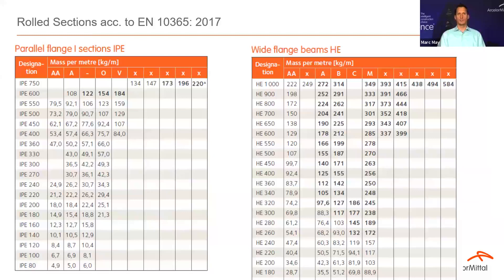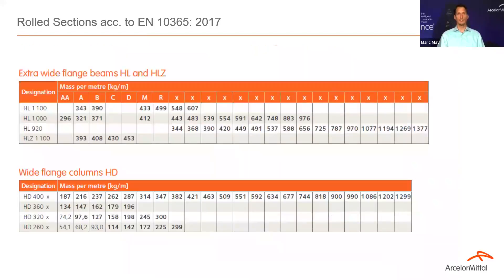Here is an overview of the sections we produce. From the smallest to the heaviest: IPE 80 to IPE 750, HE from 100 to 1000, the HL family from 920 to 1100 with different weights, and the HD column family from 260 to 400. The number indicates the nominal height, and the weight per meter gives an indication of the section size.